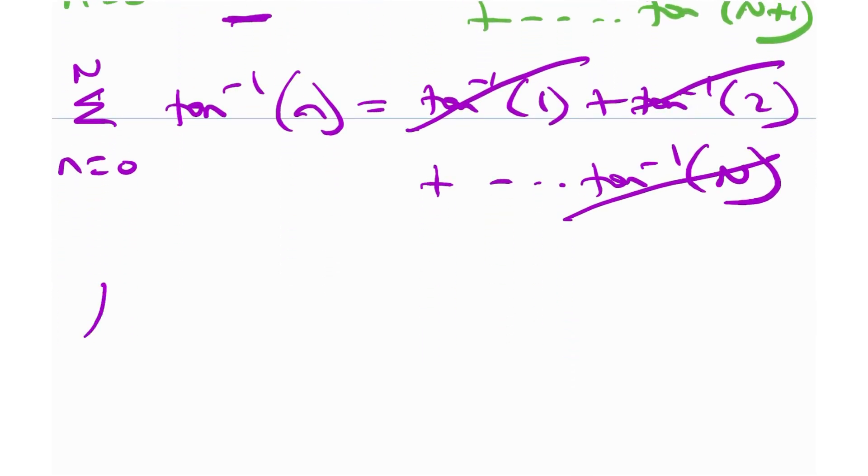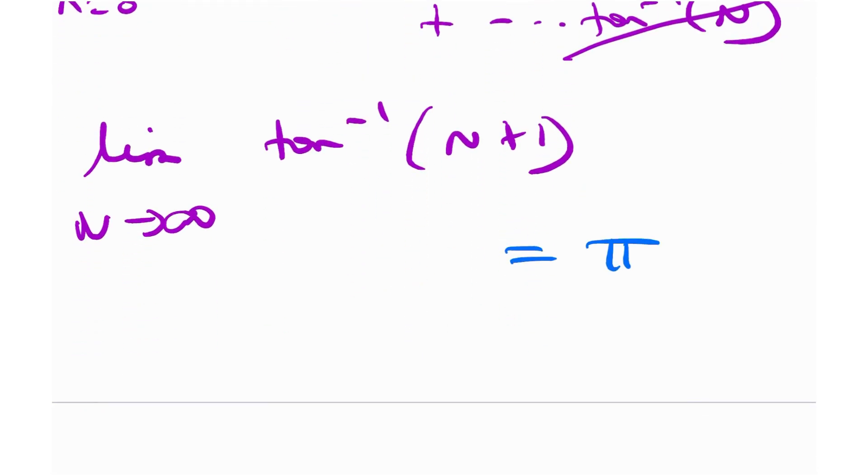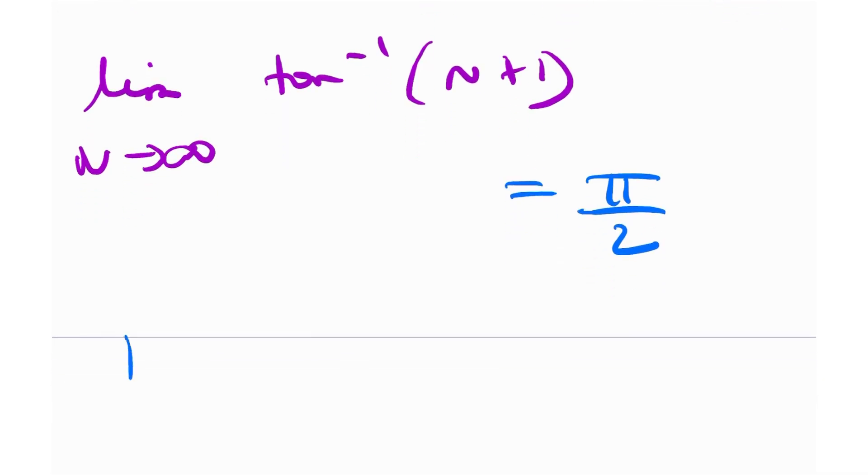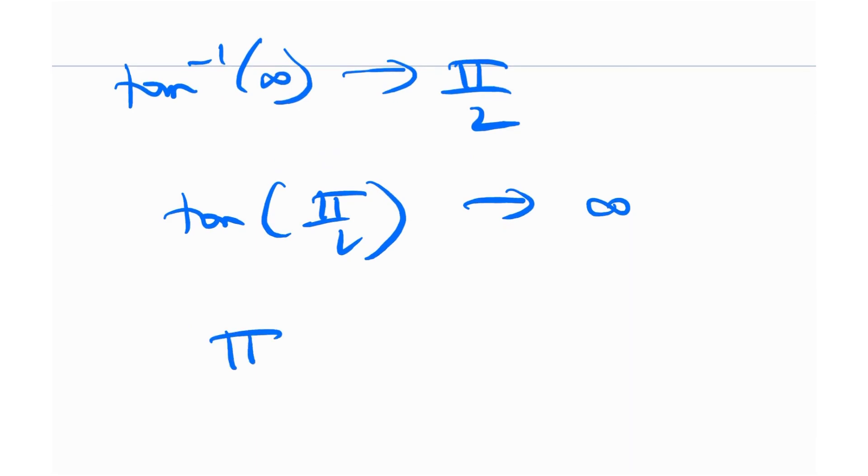And all we are really left with is the limit as this capital N tends to infinity of this last term over here, which is tangent inverse of N plus 1. And it's very easy to see that this is nothing but pi over 2. And the reason is that this is effectively tangent inverse infinity, which is indeed tending to pi over 2. Or in other words, I can just say that tangent of pi over 2 is indeed tending over to infinity. So tangent inverse infinity would be pi over 2. So what's our answer? Our answer is pi over 2.